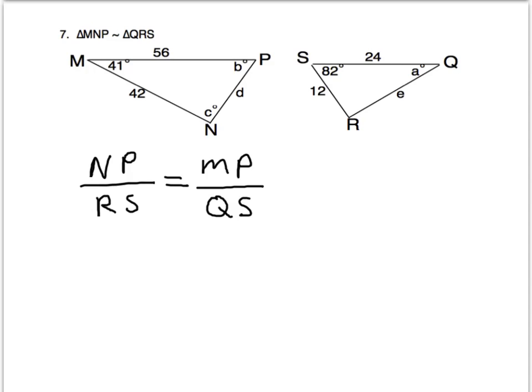Now let's substitute in those values that we know. NP, NP again refers to this length. NP is unknown. That's D units, divided by RS, which is 12, and that equals MP over QS.